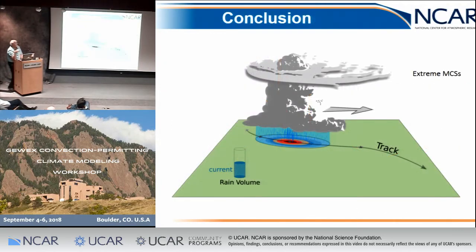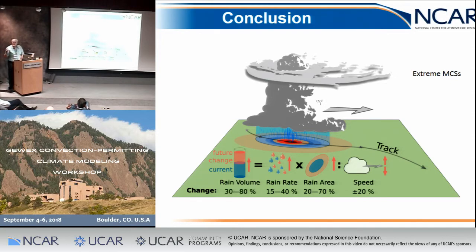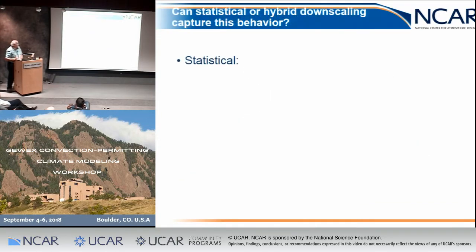Andreas produced a nice graphic showing that current rain volume equals rain rate times rain area times speed. In the future, speed didn't change much, but rain area increased by 20 to 70% and rain rate increased 15 to 80% — giving a 30 to 80% overall change, very similar to what we saw in Hurricane Harvey. This gives us more confidence that this is in fact what happened.